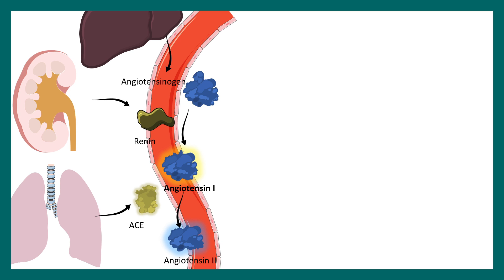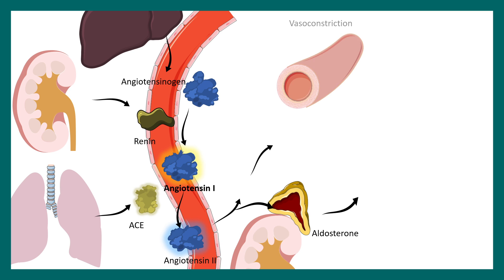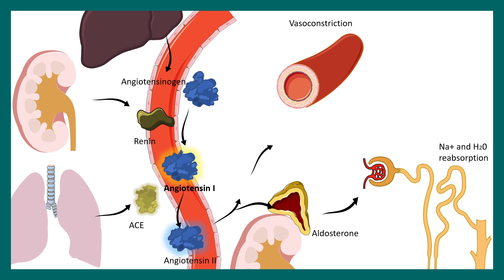The key player here is angiotensin-2. Angiotensin-2 can act on the adrenal gland and it can also act on the blood vessels. At the adrenal gland, aldosterone is secreted. Aldosterone can lead to sodium and water retention and reabsorption in the kidney. Angiotensin-2 can also directly act on the blood vessels — on the capillary endothelial cells — which leads to vasoconstriction.